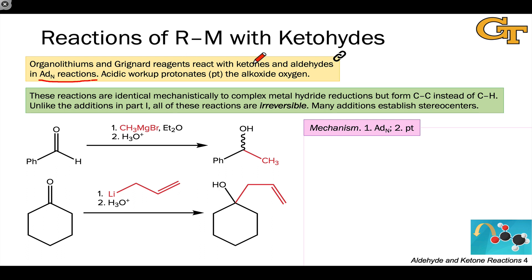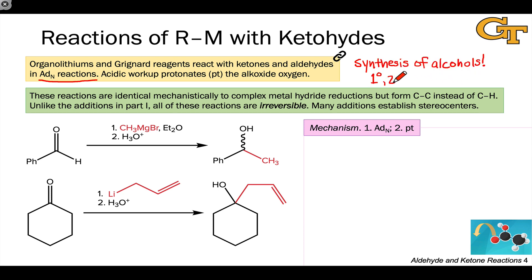The addition of an organometallic reagent to a ketone or aldehyde is a great method for the synthesis of alcohols. It'll work for the synthesis of any substitution pattern — primary, secondary, or tertiary — depending on whether we start with formaldehyde, an aldehyde, or a ketone. And mechanistically, these reactions are quite simple.